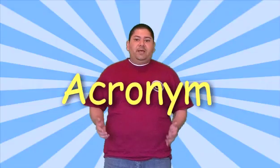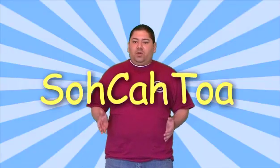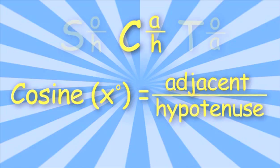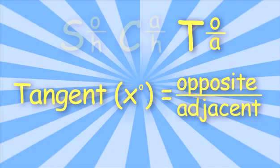Now we can start learning the trigonometric ratios by using an acronym to help us remember. An acronym is a word that stands for something. The acronym that we will use is SOHCAHTOA. SOH: Sine of x equals the opposite side over the hypotenuse. CAH: Cosine of x equals the adjacent side over the hypotenuse. TOA: Tangent of x equals the opposite side over the adjacent side.